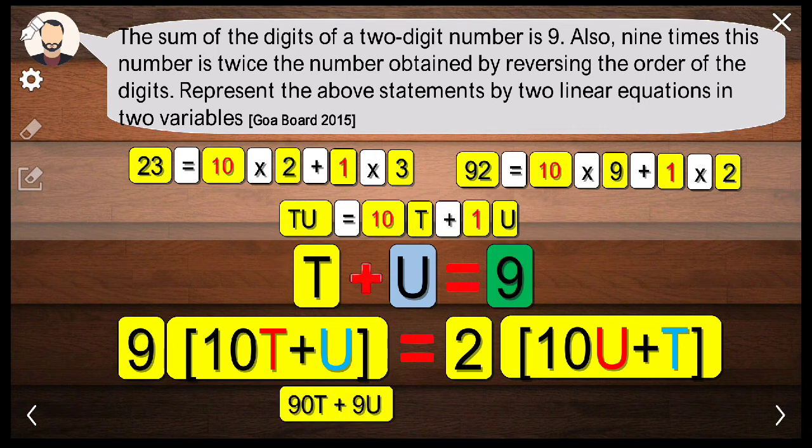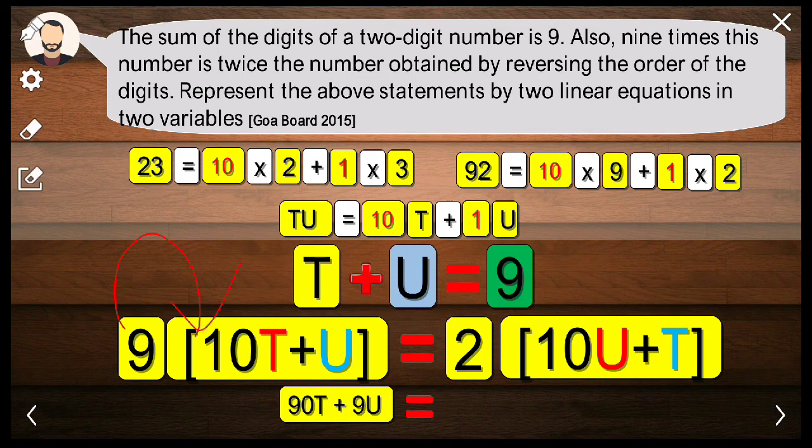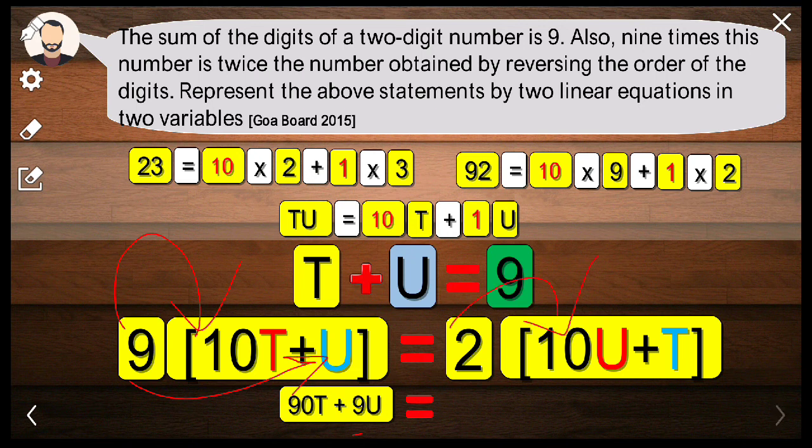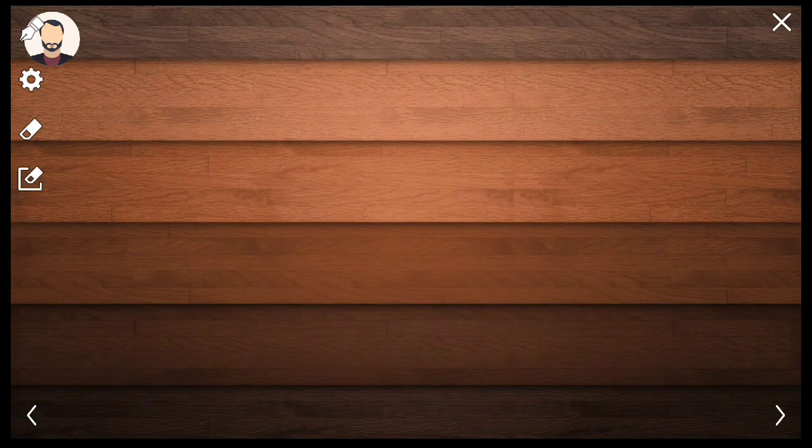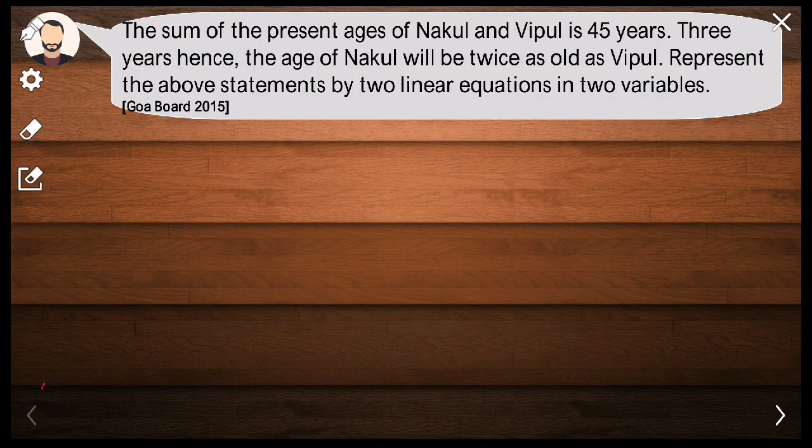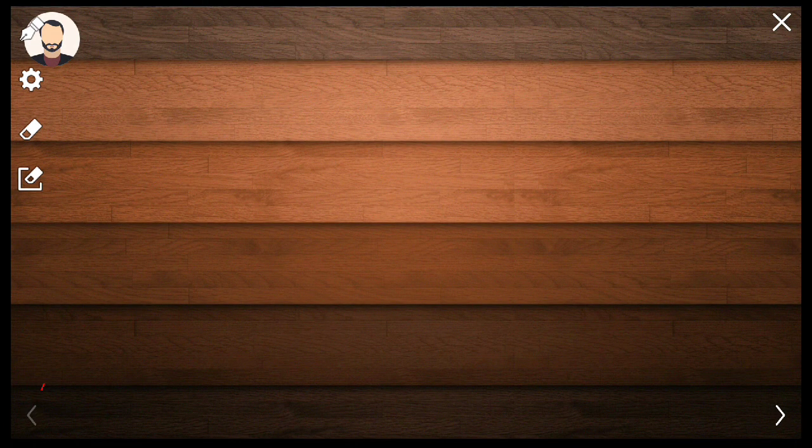This actually gives you the basic equation. After opening the bracket, 9 multiplied by 10T gives you 90T, 9 multiplied by U gives you 9U. Over here, 2 into 10U is 20U, and 2 into T gives you 2T. You need to get the variables and coefficients on one side.